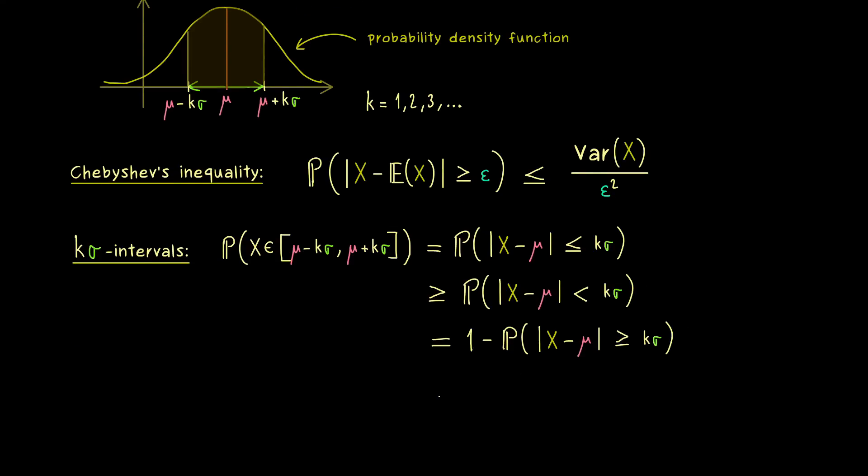Hence, we can finally use that one here. Please note, since we have a minus sign in front of the probability, the inequality here is also flipped. So we get 1 minus the variance of X divided by ε squared. And obviously our ε here is k σ. So we have σ squared in the denominator. So the variance of X cancels here. And what remains is simply 1 minus 1 over k squared.